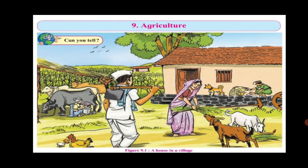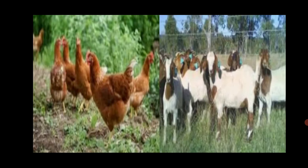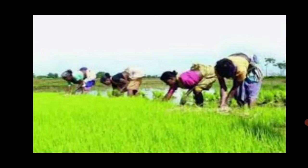A farmer keeps hens, sheep, goats and cattle. They are also seen in the picture. He gets milk, eggs, etc. from them. He sells hens and goats to earn money. He does all this for his subsistence, i.e. for his existence. All these occupations depend on natural factors. All these fall under Agriculture.